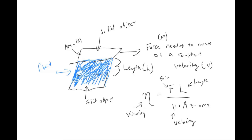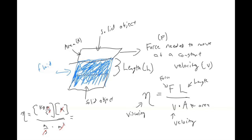If we look at all of these units: force is Newtons, which is kilogram meters per second squared; length has units of meters; velocity has units of meters per second; and area has units of meters squared. The meter squared cancels with both of those meters, and the second cancels out with that second. So you get kilograms over meter-second as the standard unit. There are other units you can use, and they talk about those in the textbook.